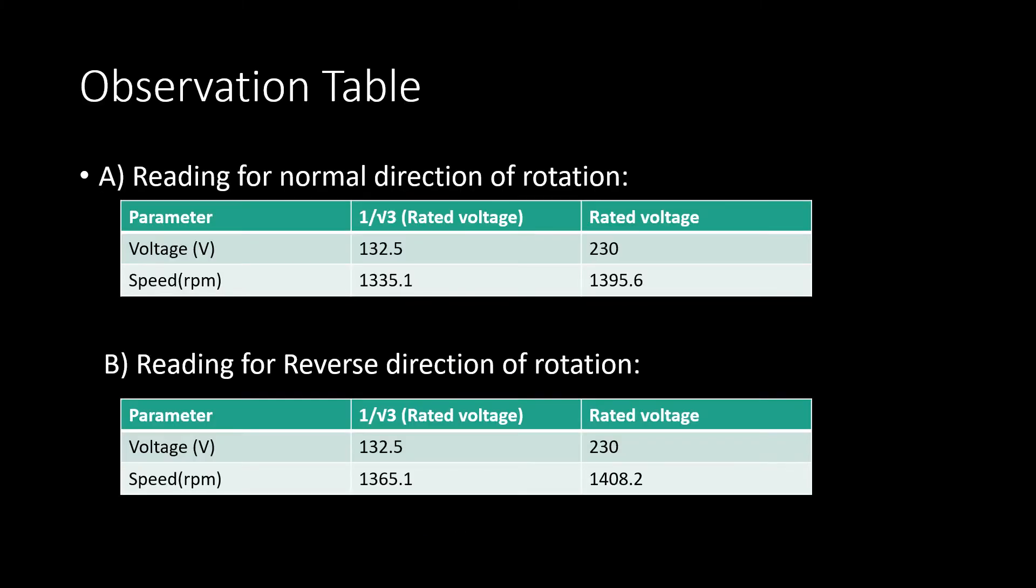Note down the reading in observation table. Carry the same test with rated voltage, so instead of 132.5 volts, now increase the voltage till its rated value that is 230 volts and note down the reading of speed.